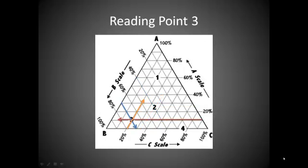Here we are looking at point number 3, and point number 3 has a 10% A, 70% B, and 20% C.